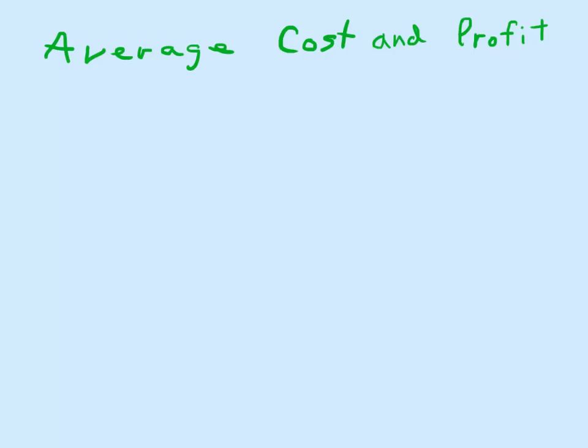All right, let's talk about average cost and profit. Average cost is equal to total cost divided by quantity. Pretty easy. Let's say total cost is $60 and quantity is 2. 60 divided by 2 is an average cost of $30. So in other words, we're going to spread our total cost among two units of output.